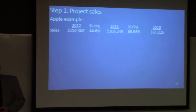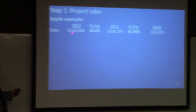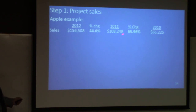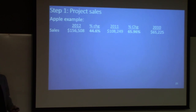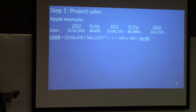Here's Apple's example. Here are their sales: 65,000, 108,000, 157,000 — in billions, by the way; it's a big company. The growth rate is really high. The second thing we notice is the growth rate is trending down — it was 66% in 2011 and only 45% in 2012. The average CAGR is 54.9%. Is that the number you would use for next year? I wouldn't, because if the growth rate seems to be going down, you shouldn't just apply the average.